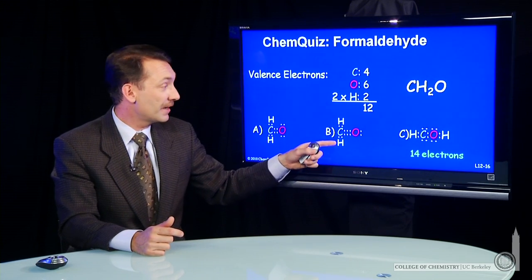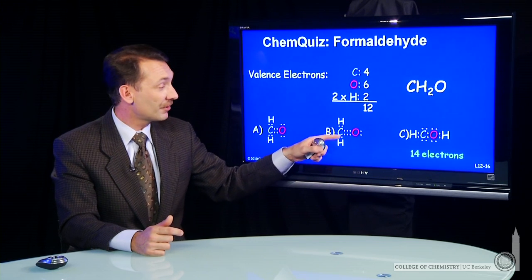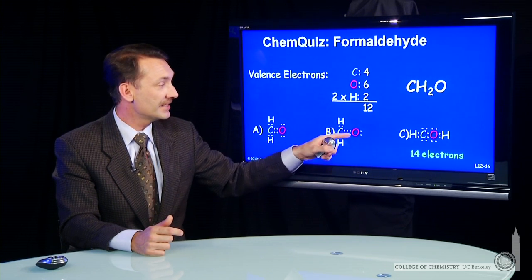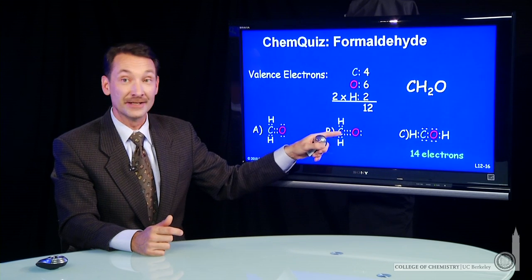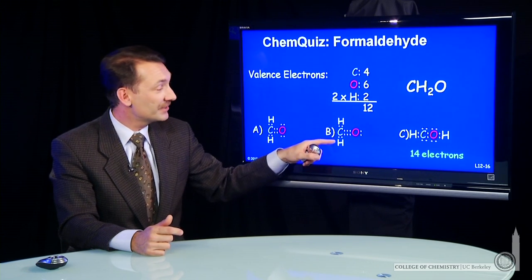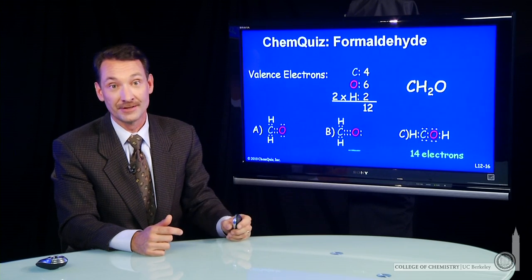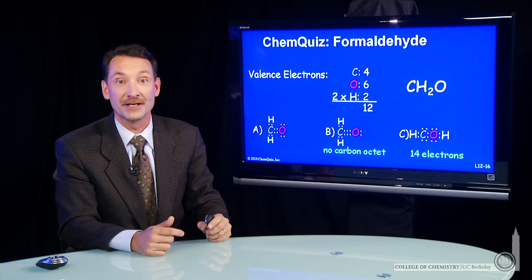How about B? If you look at B, there's a subtle error here. This has 12 electrons, 2, 4, 6, 8, 10, 12. But carbon has too many. Carbon wants an octet, but it's sharing 2, 4, 6, 8, 10 electrons. So there's no octet on carbon here.